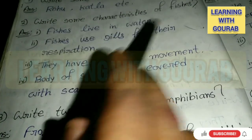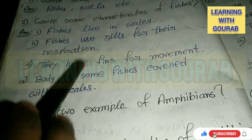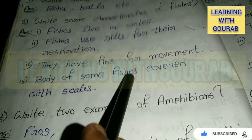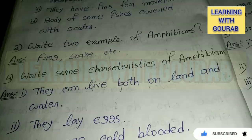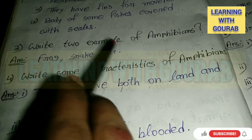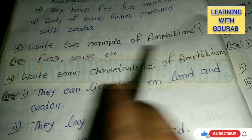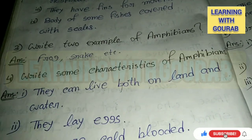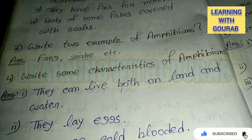Answer: Fishes live in water. Fishes use gills for their respiration. They have fins for movement. The body of some fishes is covered with scales. Next question: Write two examples of amphibians. Answer: Frog, snake, etc.